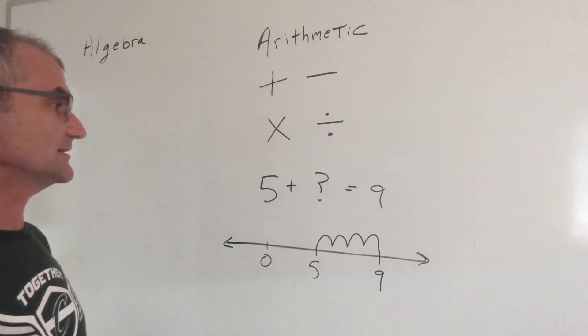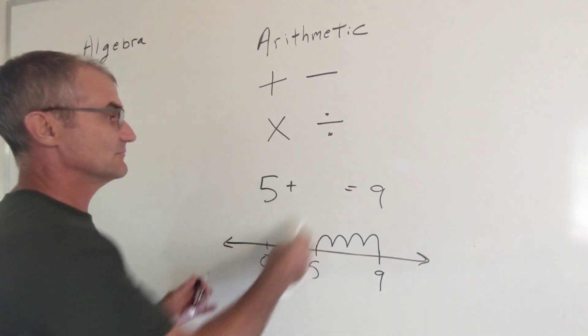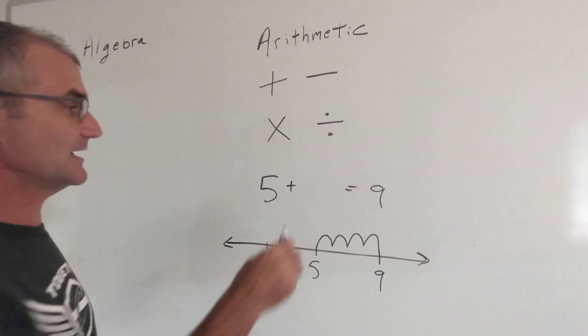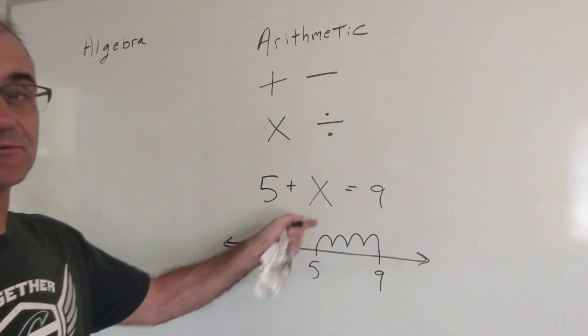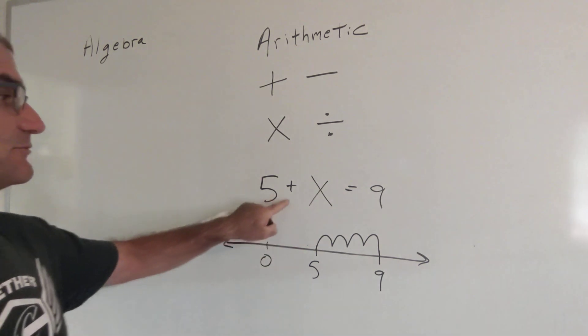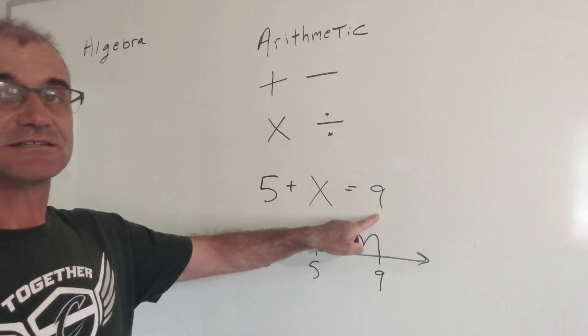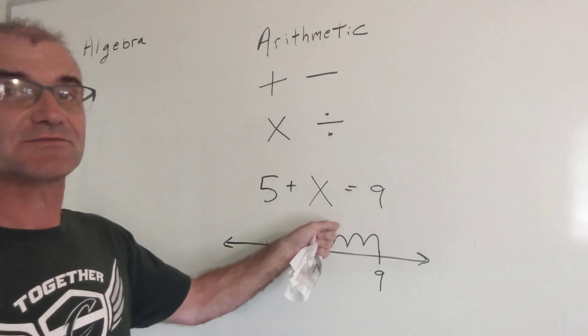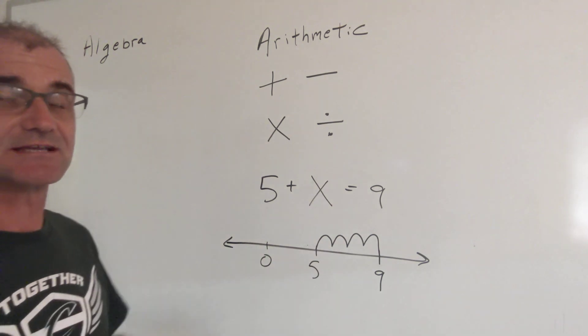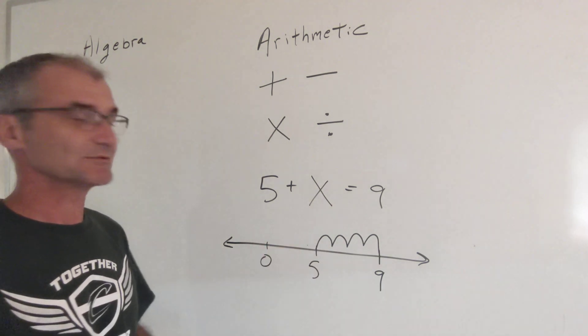All I'm really saying here is 5 plus what? Well whatever we're going to call what, we'll call x. x is just a common letter for an unknown, a variable. And now I'm saying 5 plus what equals 9. Just like you did in arithmetic, it's really the same thing with algebra except for the unknown we're calling a variable x.